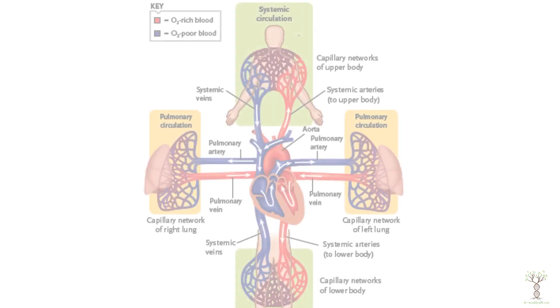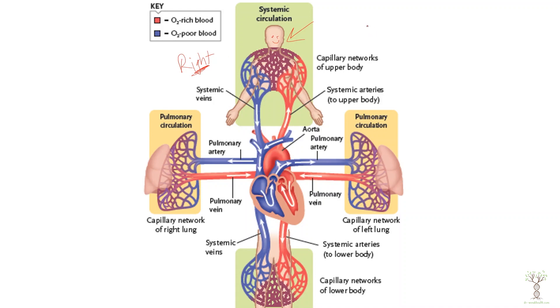Now let's look at the general structure of the cardiovascular system and how we move blood through the heart and blood vessels to the tissues. When we look at anatomical diagrams, the human in the textbook is facing the reader — so this is the right side of the body and this is the left side of the body.